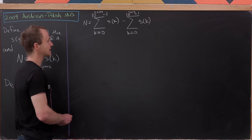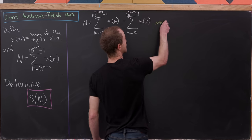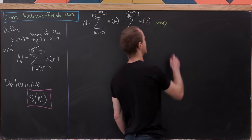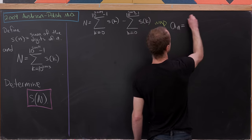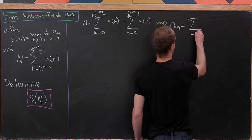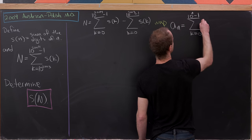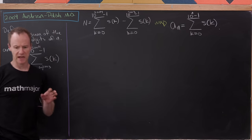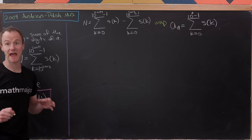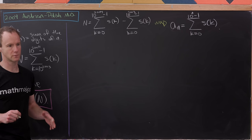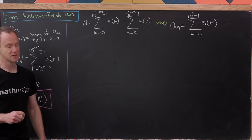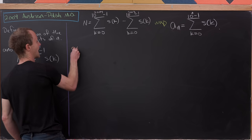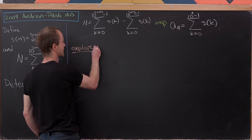This motivates us to look at the sequence A_n, which is equal to the sum as k goes from 0 to 10^n minus 1 of S(k). If we can get a handle on what this sequence A_n looks like, we're essentially all set.